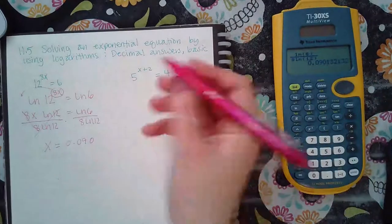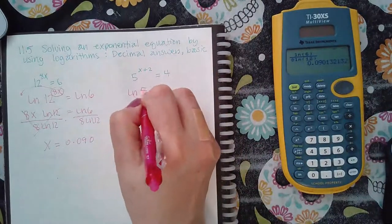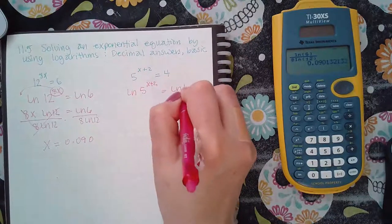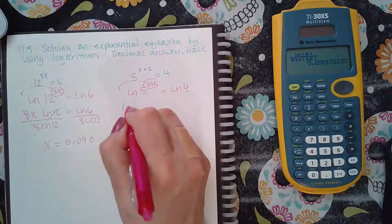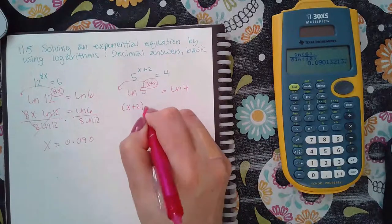Now for the other side, I can apply the ln on both sides. I get this expression. Then I can take that exponent and put it in the front. It does have two terms. So when you put it in the front, be sure to use the parentheses.